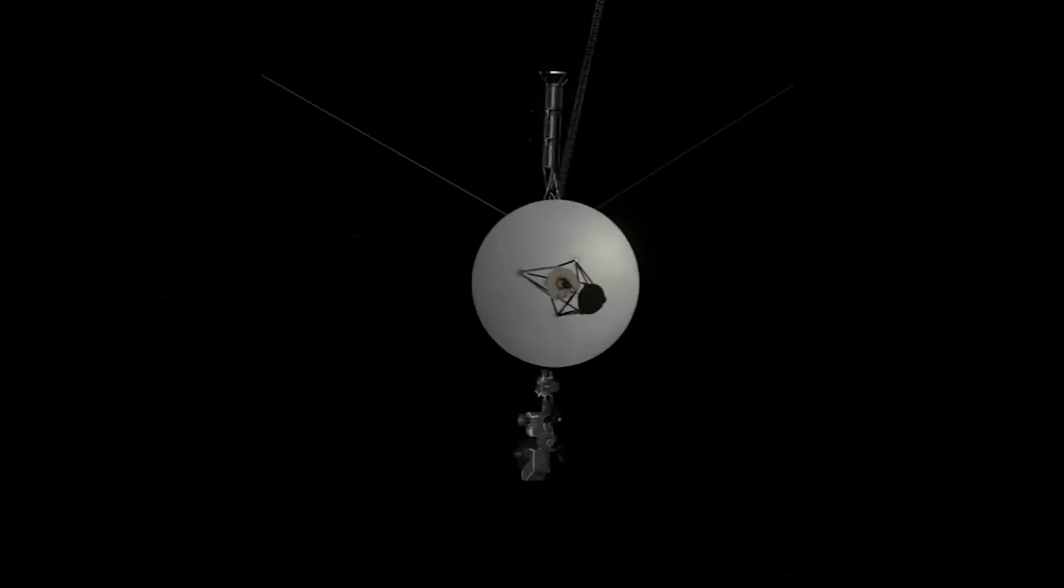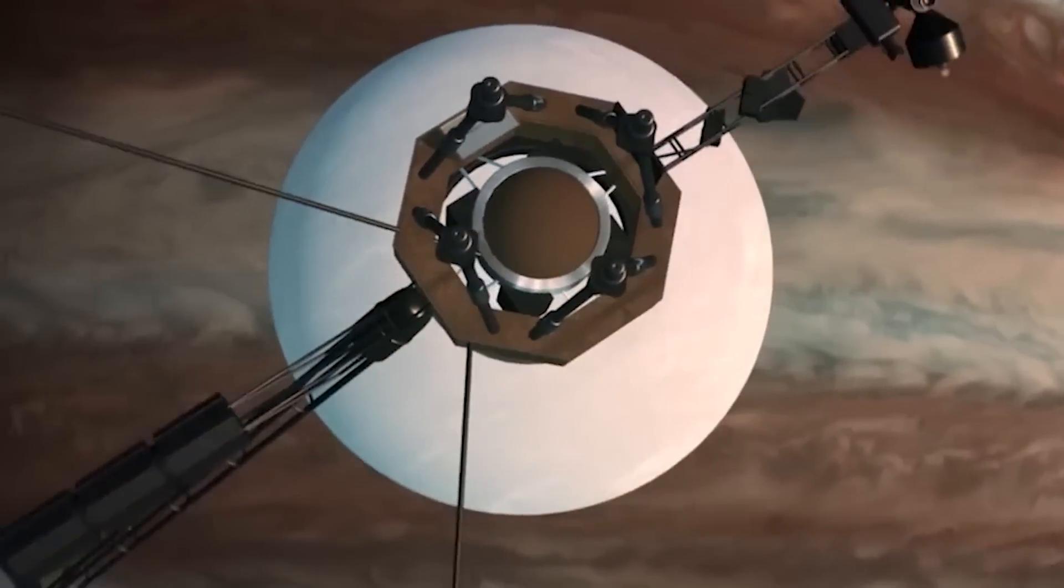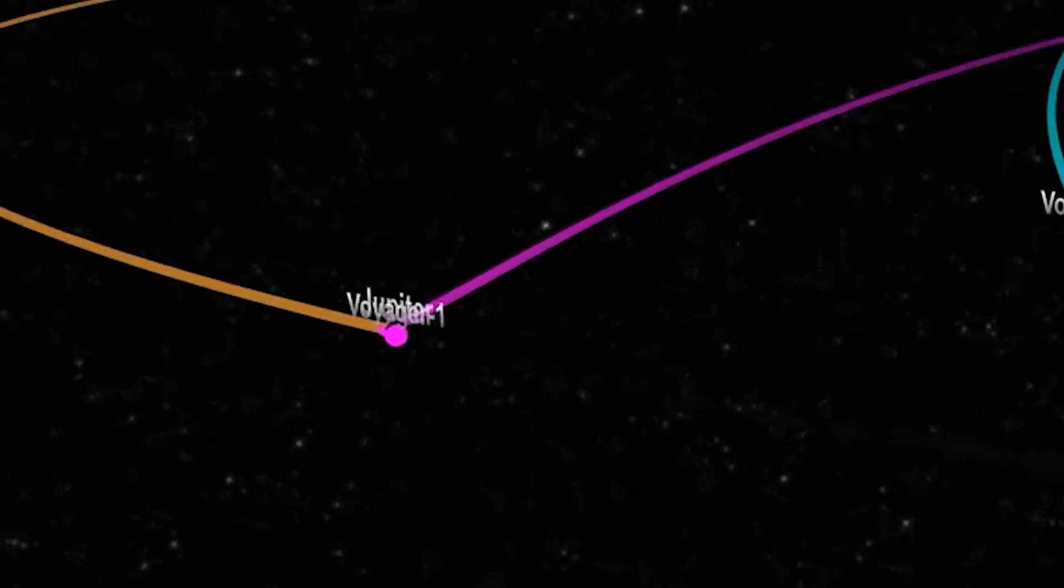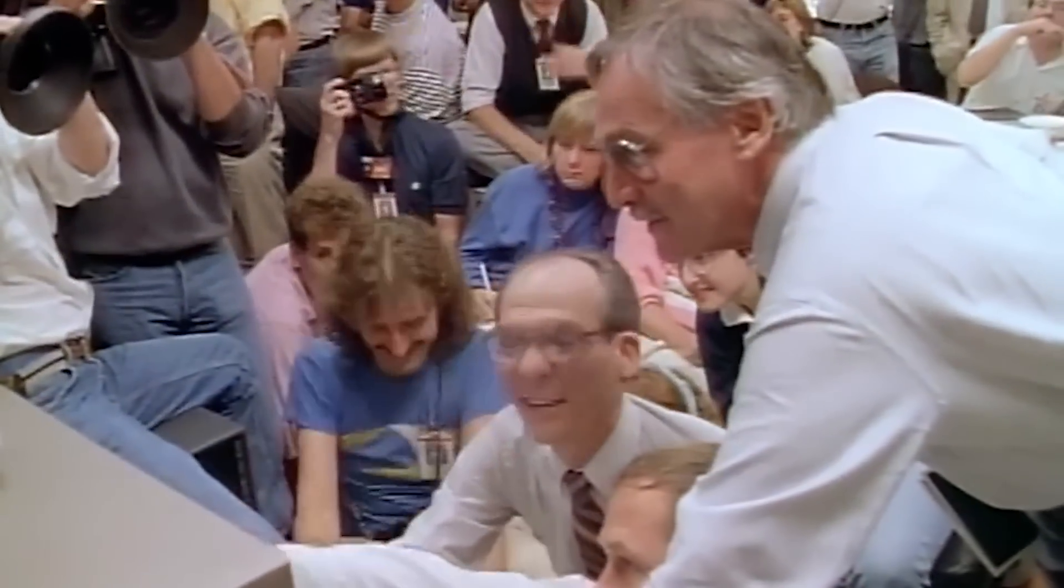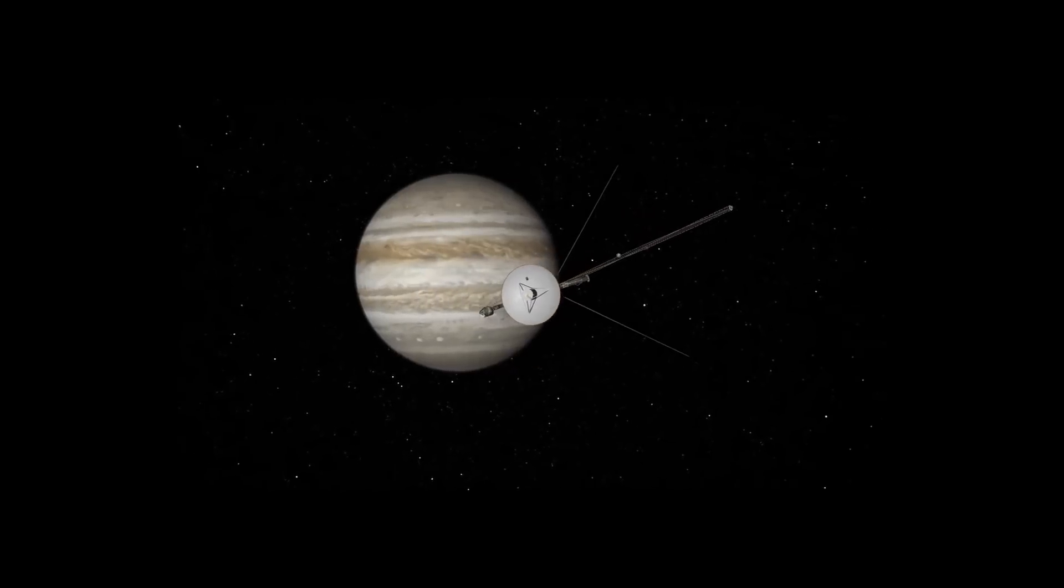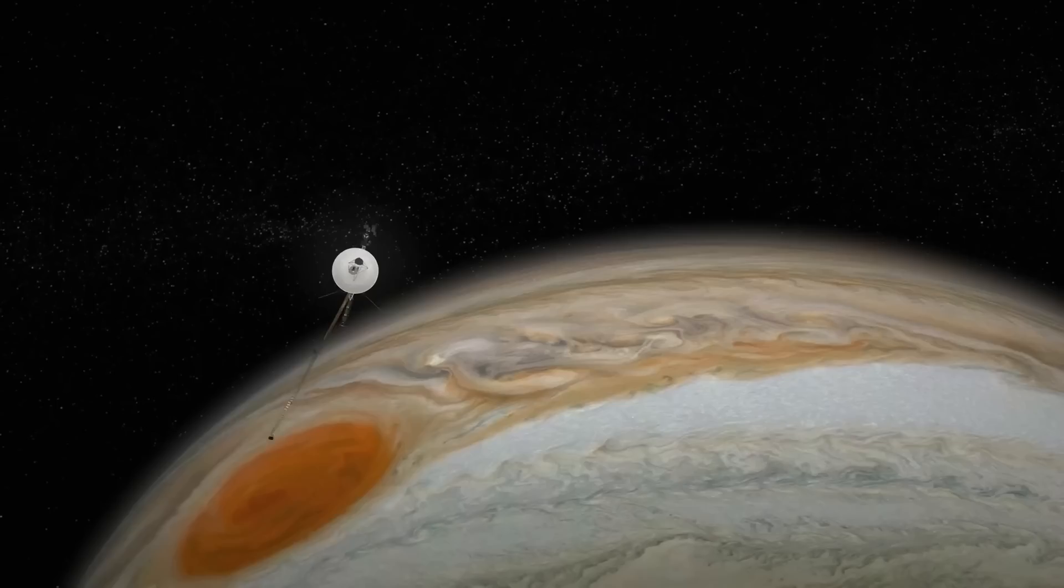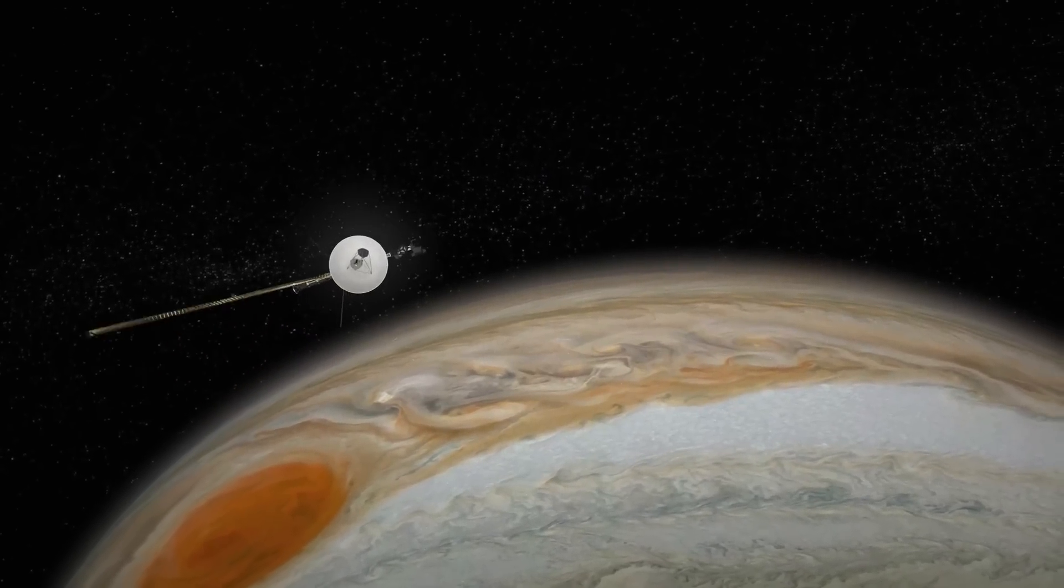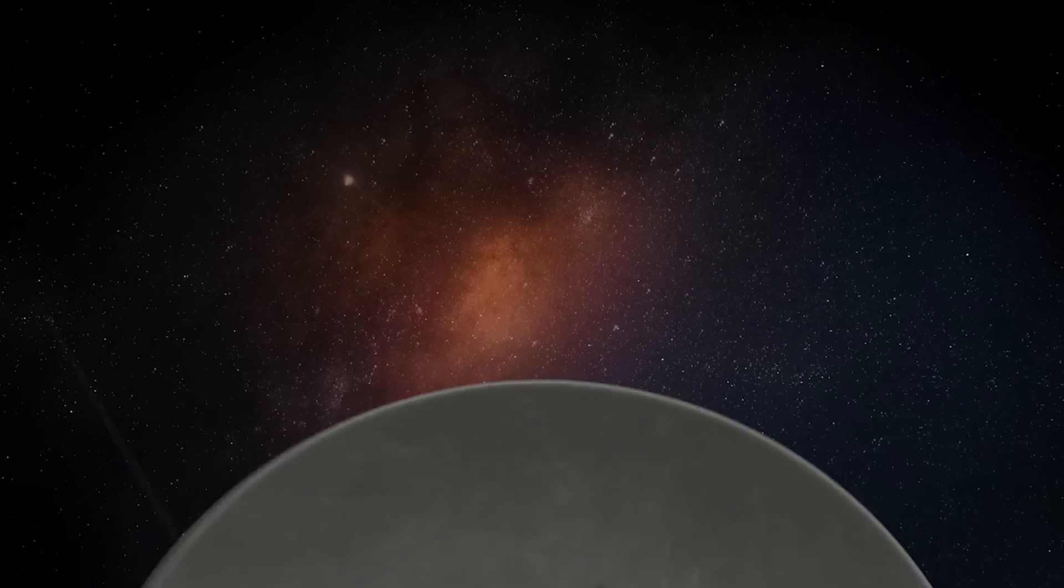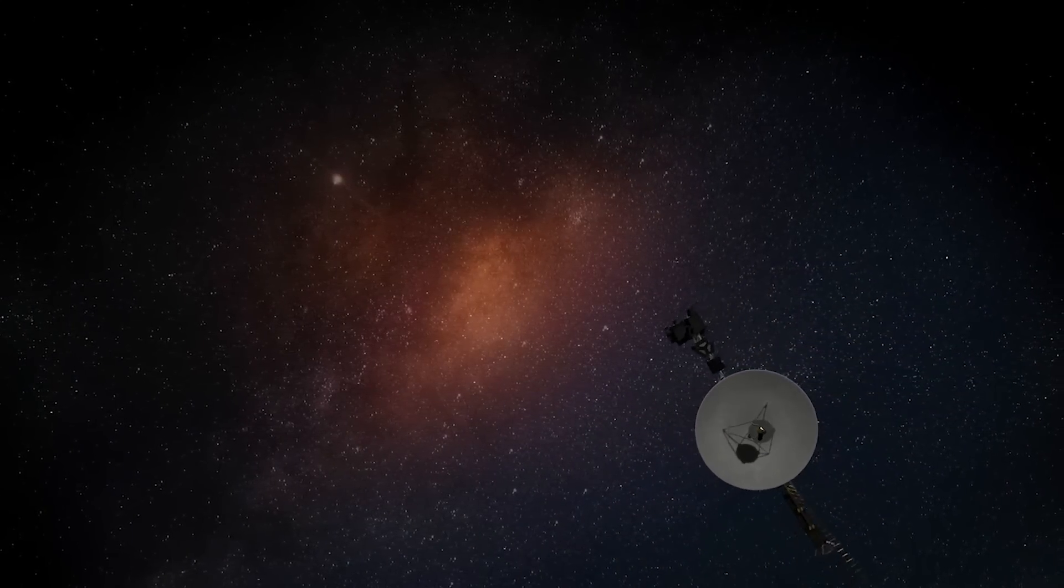Take Voyager 1, for example. As it approached Jupiter, the largest gas giant in our solar system, it needed to hit just the right angle and speed. Thanks to the brilliant calculations of NASA's Jet Propulsion Laboratory, Voyager 1 used Jupiter's gravity to slingshot itself forward, gaining the necessary acceleration for its journey. It's a high-stakes maneuver that requires pinpoint precision. Approach at the wrong angle or speed, and the mission could have ended in disaster.